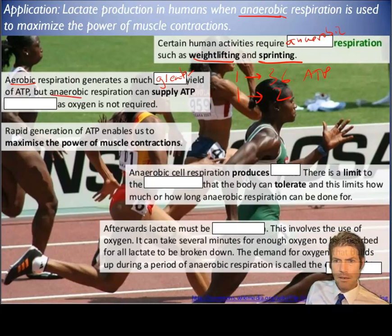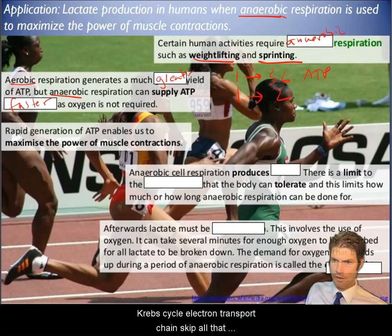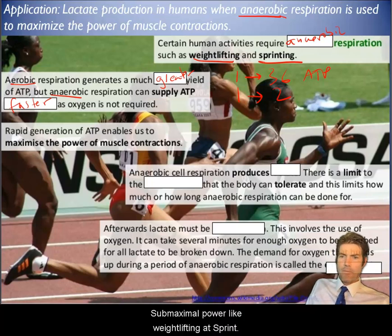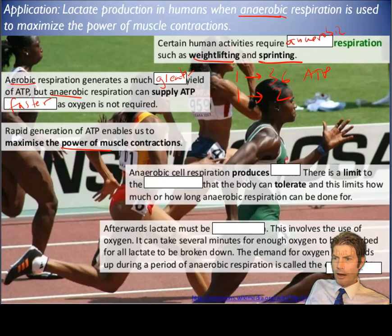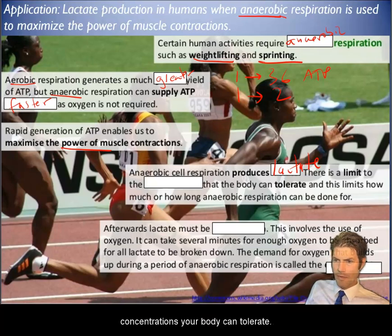Anaerobic respiration can supply ATP a lot faster. It doesn't need to go through the steps in the mitochondria, Krebs cycle, electron transport chain - skip all that, get right to the payout. So maximal power like weightlifting and sprinting. The product in humans is lactate, and there's a limit to the concentrations your body can tolerate.